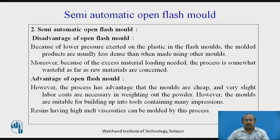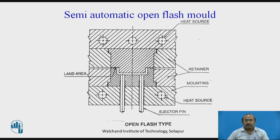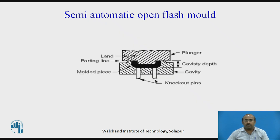Some disadvantages: because of the excess material loading needed, the process is somewhat wasteful as far as raw materials are concerned. Advantage of open flash mold: resins having high melt viscosities can be molded by this process. This is the semi-automatic open flash mold, shown in two diagrams.